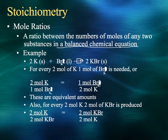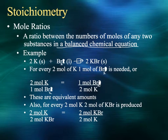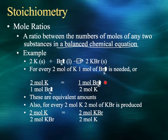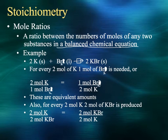Because of the coefficients out front, you can write them as equivalent amounts. You can write this as either two moles of potassium per one mole of bromine molecules, or one mole of bromine molecules per every two moles of potassium — either way it means the same thing. This goes back to what we learned about conversion factors: equivalent amounts can be written over each other to help us convert. Two moles of potassium would be equivalent to one mole of bromine molecules, but only for this specific reaction.